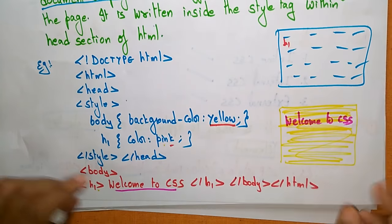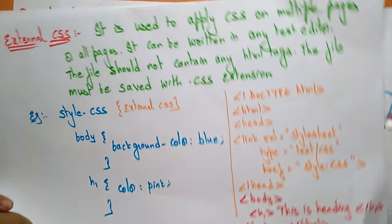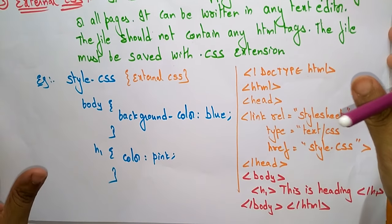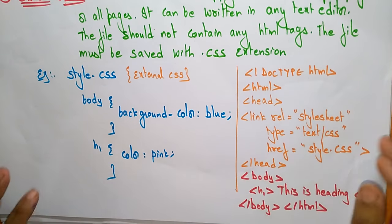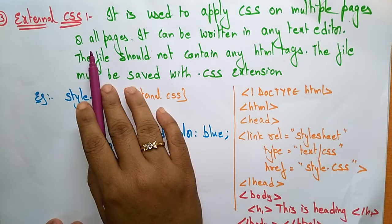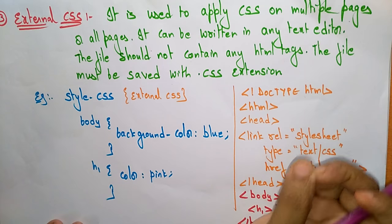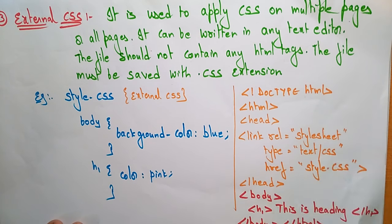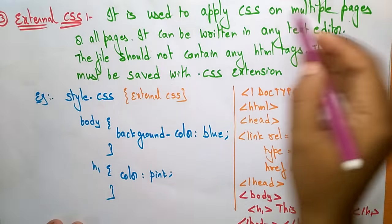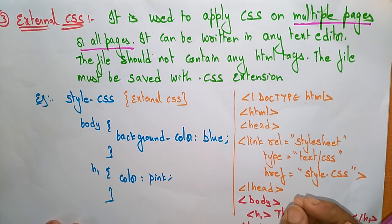The next way is external CSS. External means we are calling an external file in your HTML document. It is used to apply cascading style sheets on multiple pages or all pages. Inline is for a single statement, internal is for a complete document or page, whereas external applies cascading style sheets for all the pages in your website.